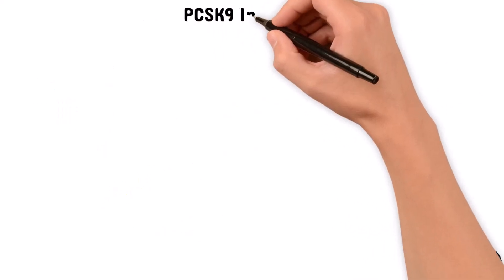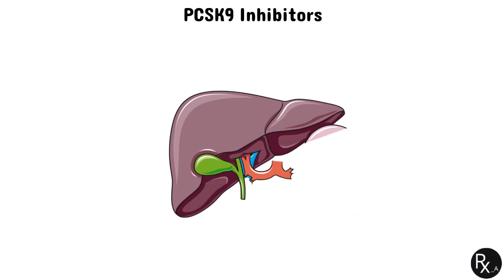Let's now discuss PCSK9 inhibitors, the next class of medications that lower cholesterol. PCSK9 is a blood-circulating enzyme which attaches to LDL receptors on the surface of liver cells and encourages their breakdown. In simpler terms, PCSK9 activity decreases the removal of LDL from the bloodstream. PCSK9 inhibitors are monoclonal antibodies that attach to and inactivate PCSK9. When PCSK9 is absent, LDL receptors are more available to bind and remove LDL from the bloodstream, which lowers LDL cholesterol levels.